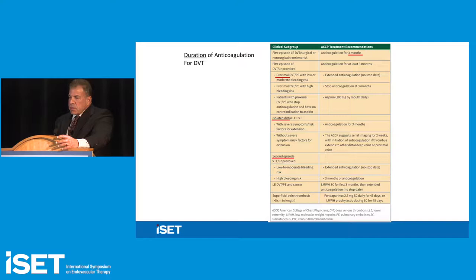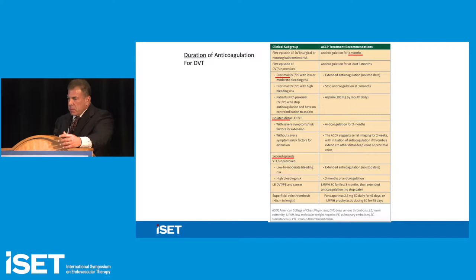As for duration of anticoagulation, three months is the benchmark, then you individualize: Is it proximal? Is it distal calf thrombosis? Is it a secondary episode? What are the bleeding risks? You may want to extend anticoagulation based on other risk factors, and many patients fall into lifelong anticoagulation if they have two or three thrombophilic markers and recurrent thrombosis.